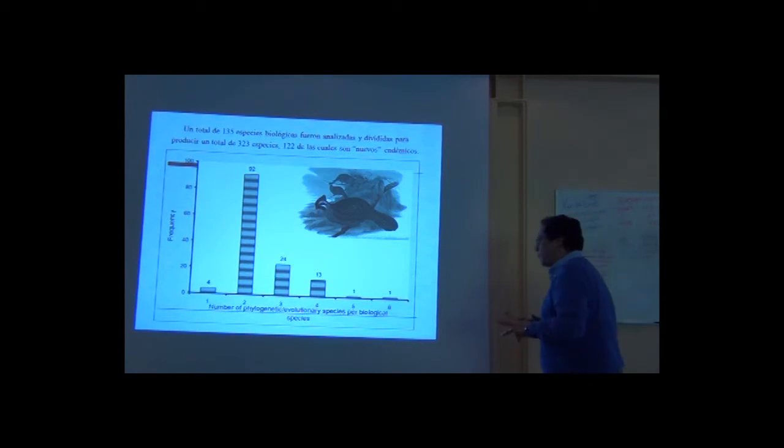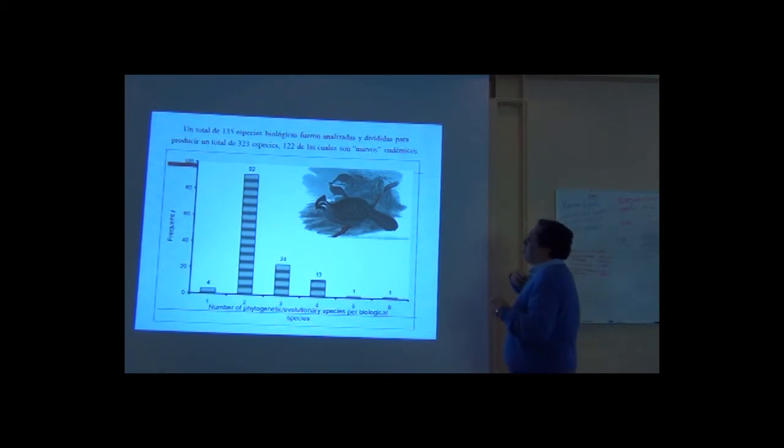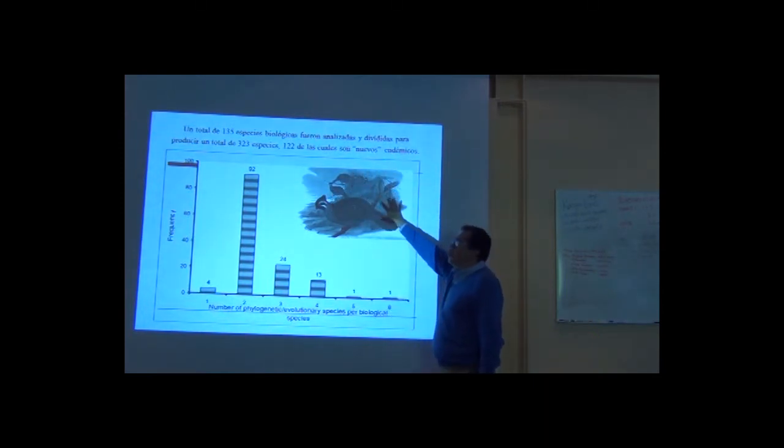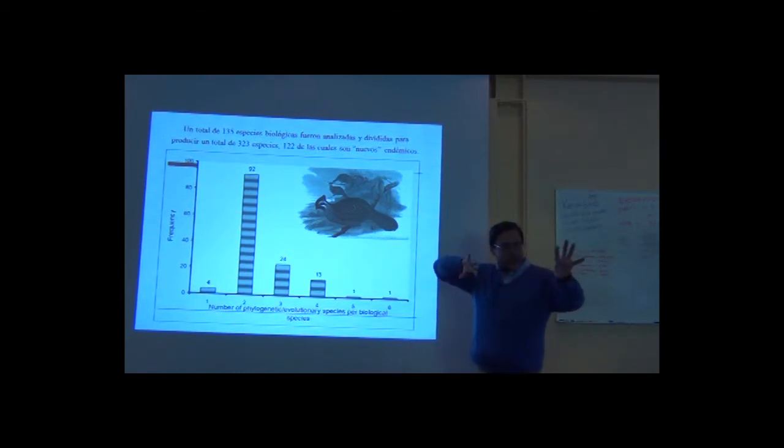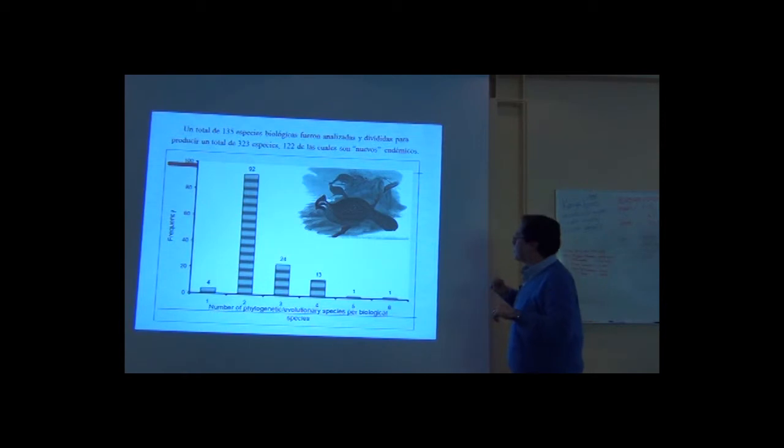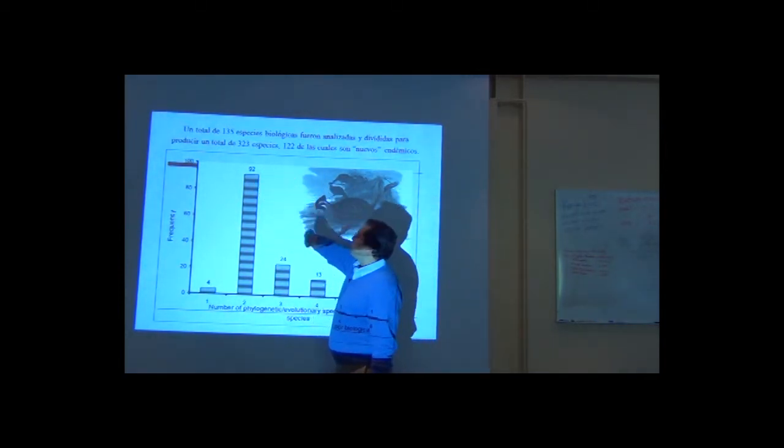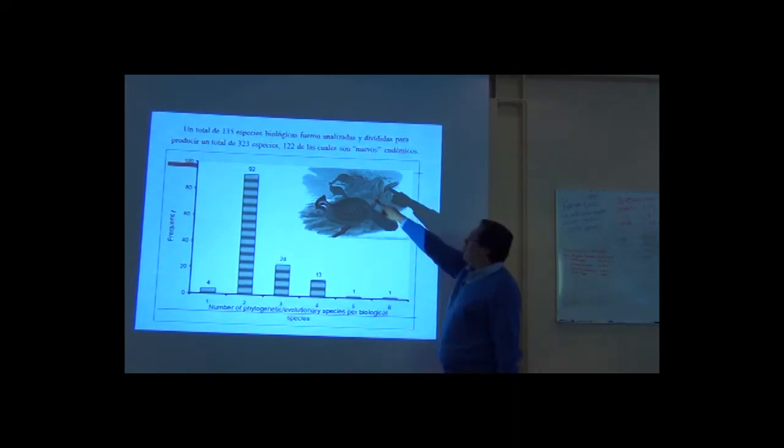What happened here? We have 1,000 species of birds, for 135 of which we detected differences, evident differences, that led us to think that they were different species. Of those more than 100 species that were split, we produced a total of 323 species, 122 of which are new endemics.